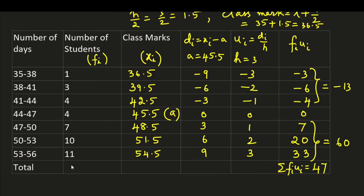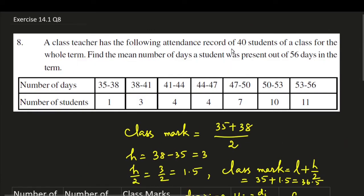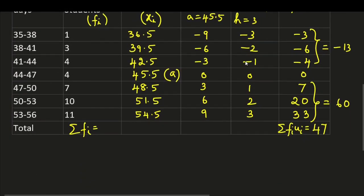Here sum of frequencies, sigma fi, we are already given with the data here. Here we have 40 students. So it should be 40.